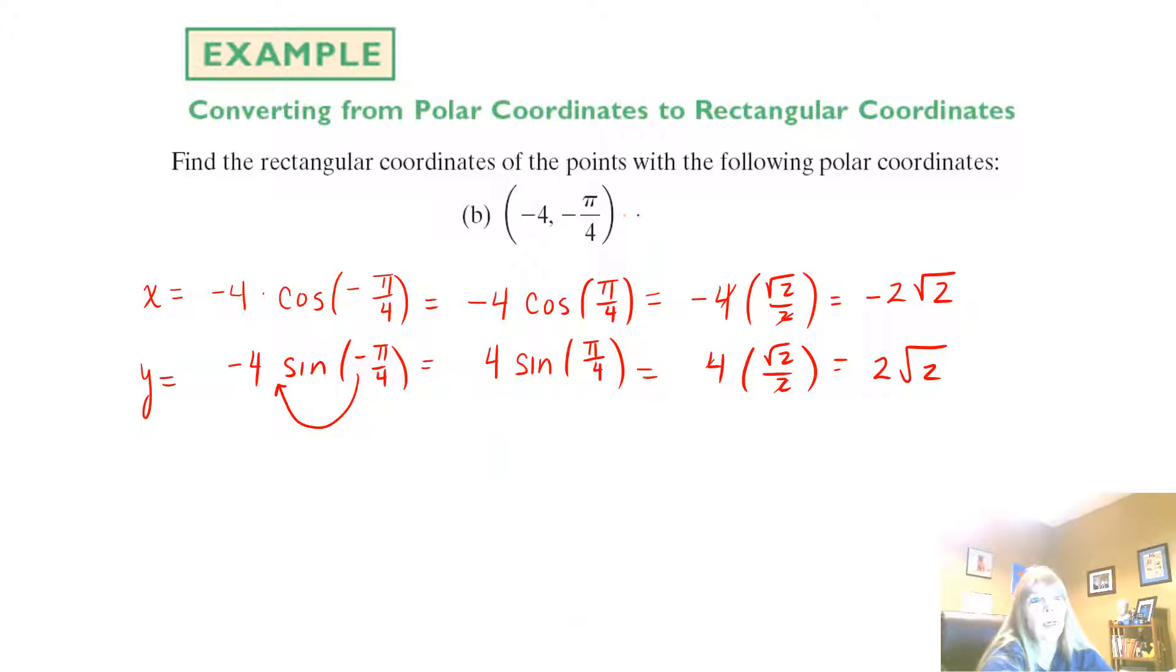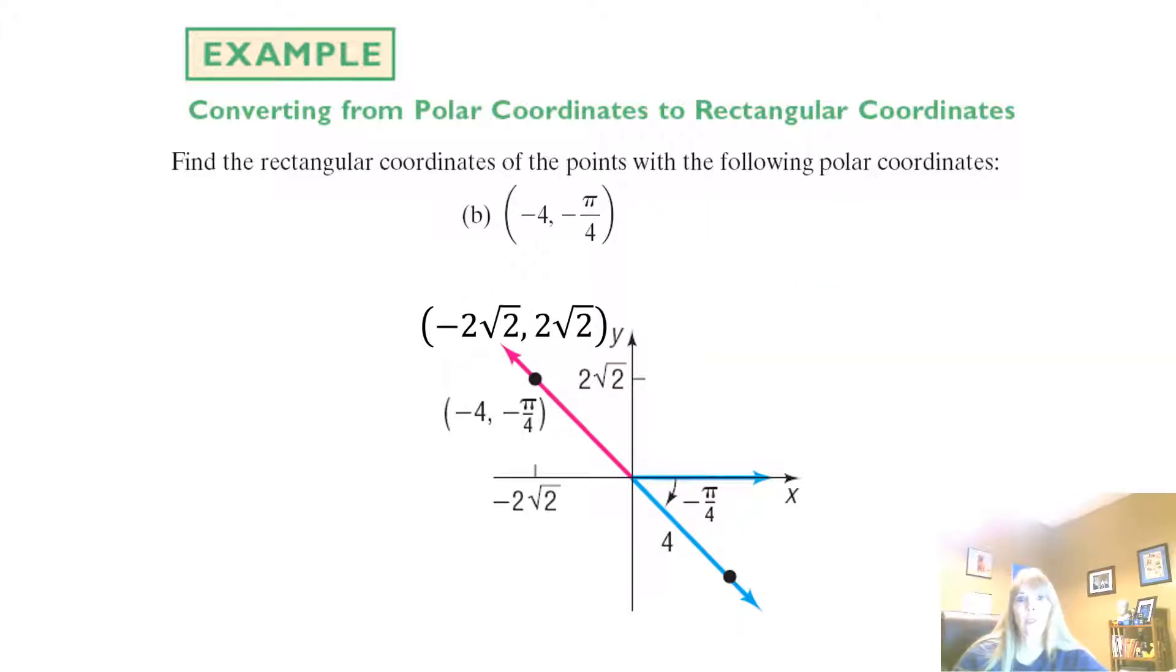So again, my rectangular coordinates for these polar coordinates would be negative 2 square root of 2 and 2 square root of 2. Looking at a picture, that's what it looked like. So looking here, I can certainly see that, well, let's first look at how do I graph negative pi over 4.